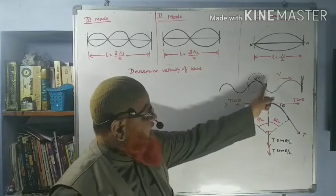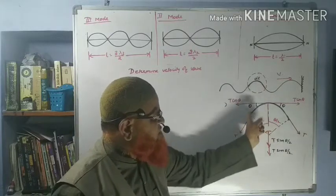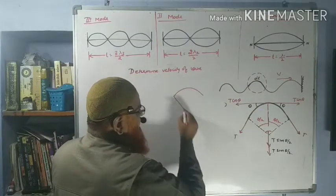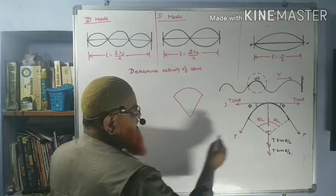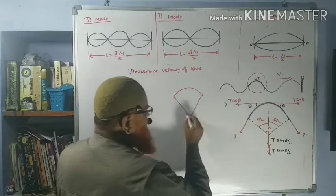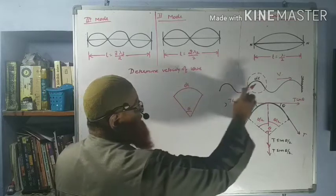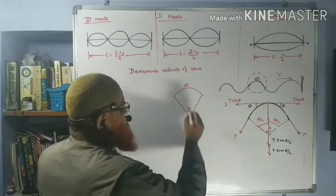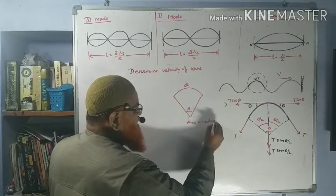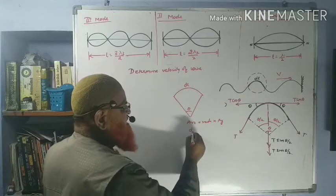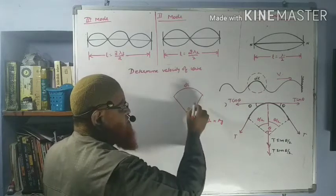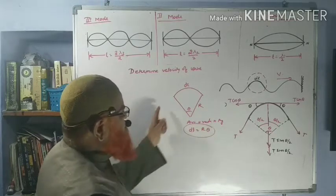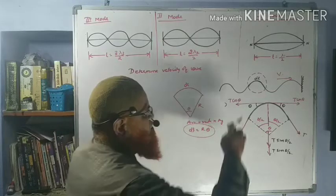Let us consider a small part of the string separately. This part is just like an arc of a sector. The angle here is theta, and the length of the small part of the string is dl. You know that arc equals radius into angle, so dl is equal to r into theta.